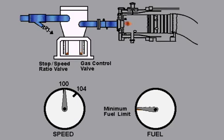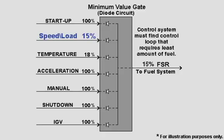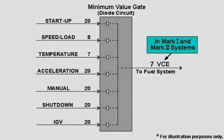This is important so that the flame is maintained in the combustors but energy is reduced to the turbine. In this example, the speed and load control loop is in control because it requires the least amount of fuel at 15%. If speed and load were to go up to 19%, however, temperature would then be in control because it requires the least amount of fuel. Please note that in the Mark I and Mark II control systems, VCE, Variable Control Electromotive Force, is used instead of FSR and is measured in volts rather than percentages.